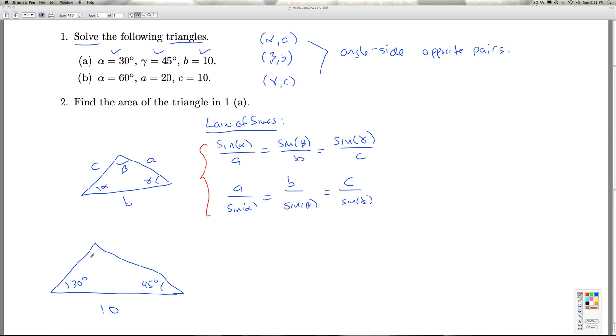All right, so first thing I can go after pretty quick is beta. We're given an angle, an included side, and another angle. So from geometry, this is the angle side angle case. We know that determines one and only one triangle.